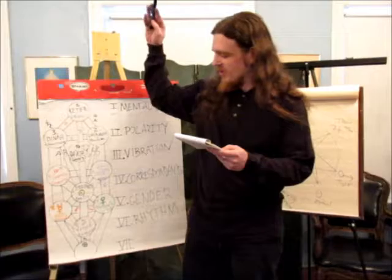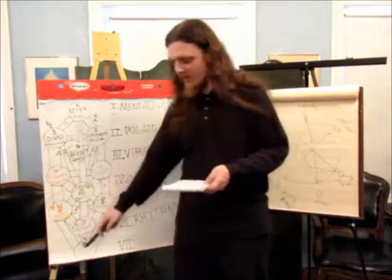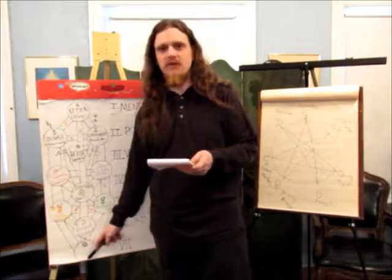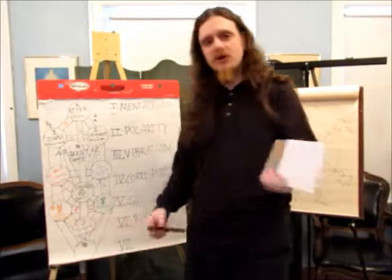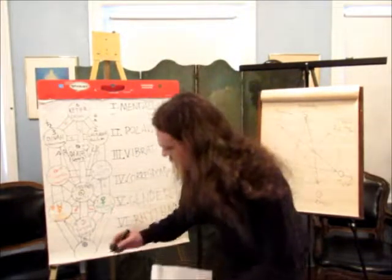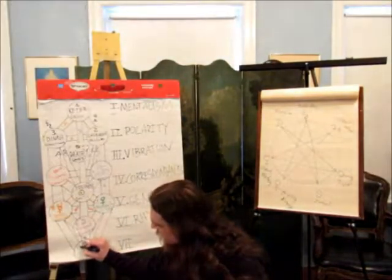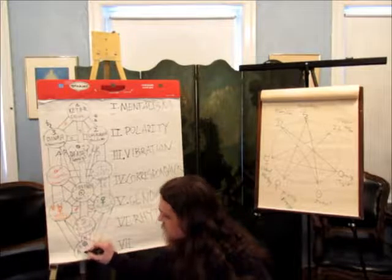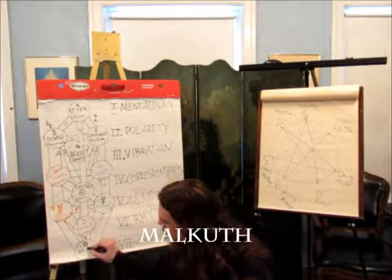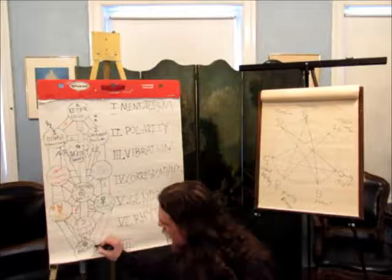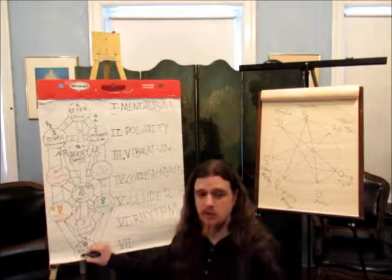Now that we've talked about the tree, it's time to get down here to the final where we live. It's Number 10, its name is Malkuth, and Malkuth means kingdom.